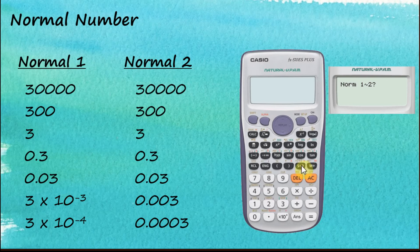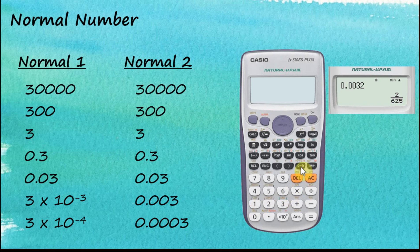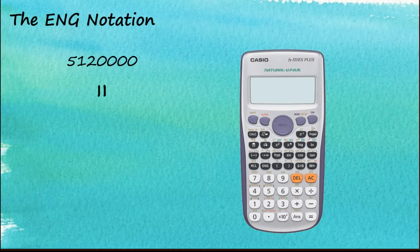Let's choose Normal 2 first and try the number 0.0032. Press equal — this shows as a fraction; click S↔D and it's displayed as a normal number. Now if we change to Normal 1, you will see the answer is given in scientific notation because 0.0032 is less than 0.01. So for Normal 1, any number less than 0.01 will be given in scientific notation.